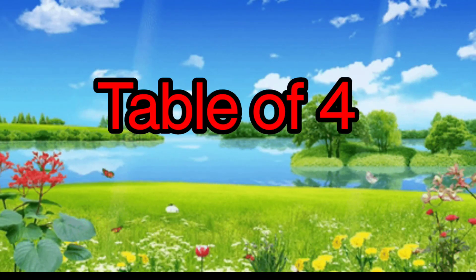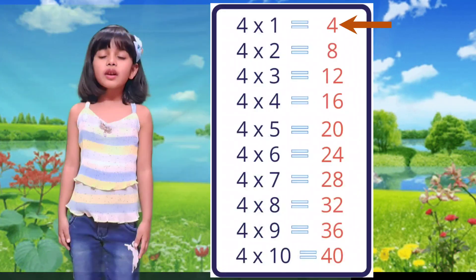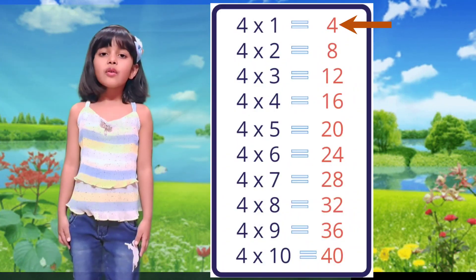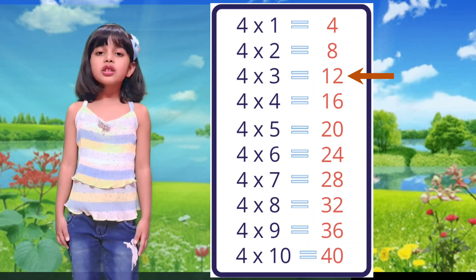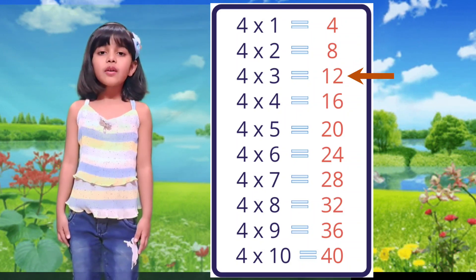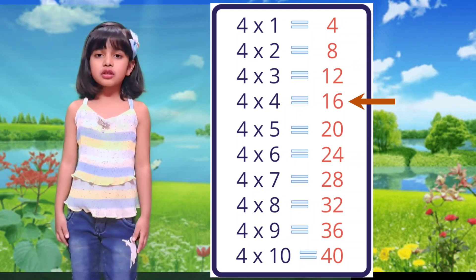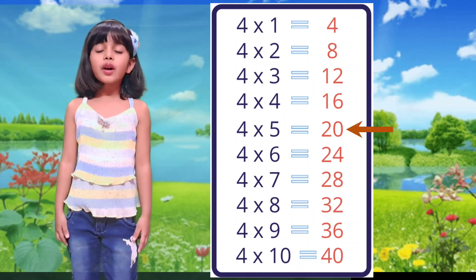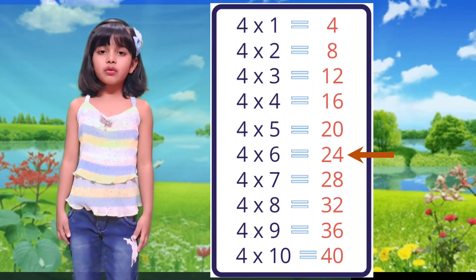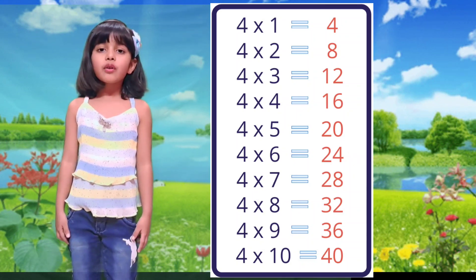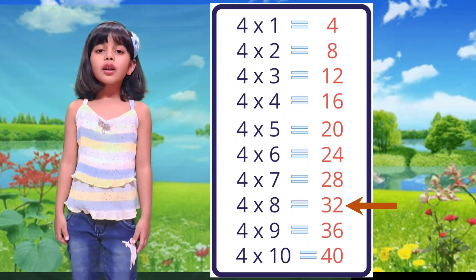Table of 4. 4×1 is 4, 4×2 is 8, 4×3 is 12, 4×4 is 16, 4×5 is 20, 4×6 is 24, 4×7 is 28.